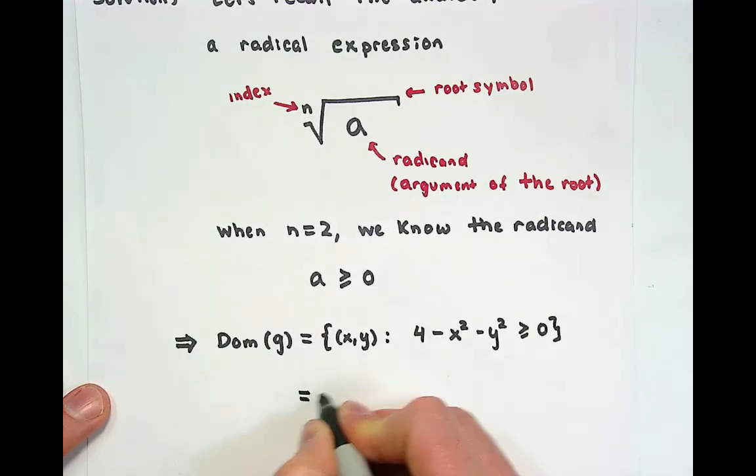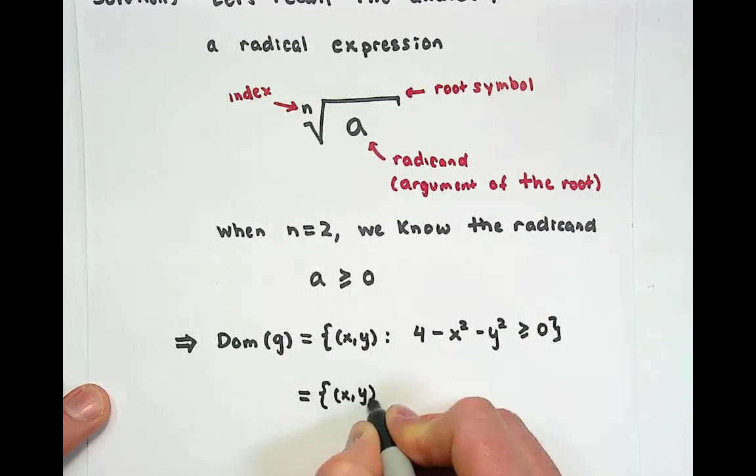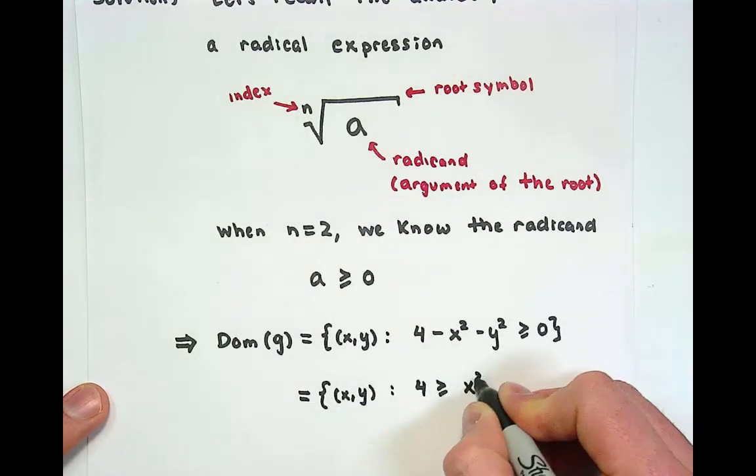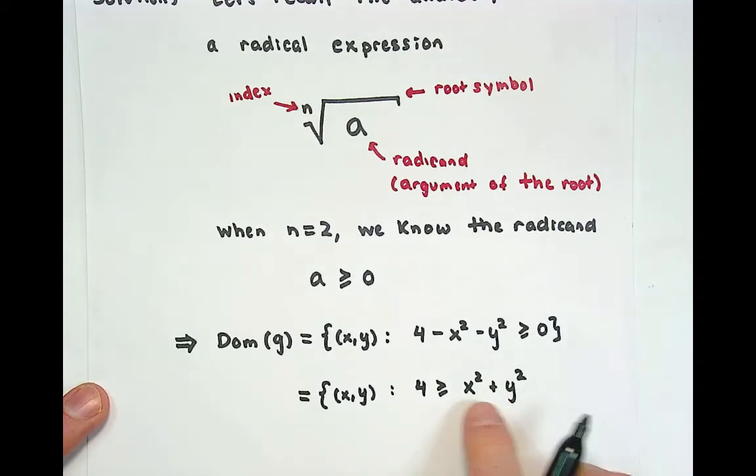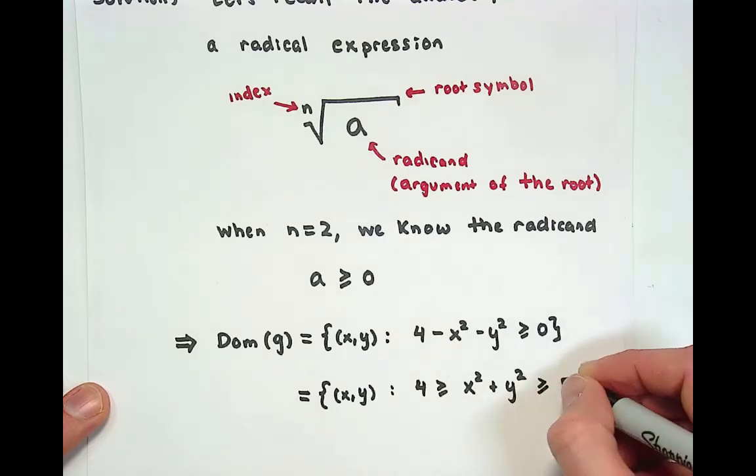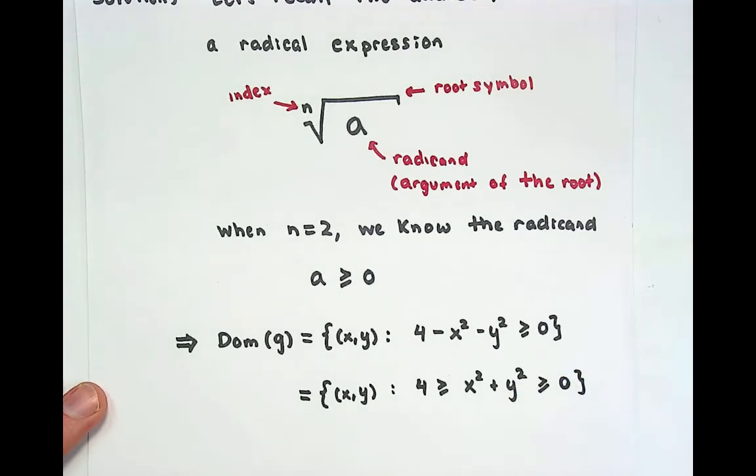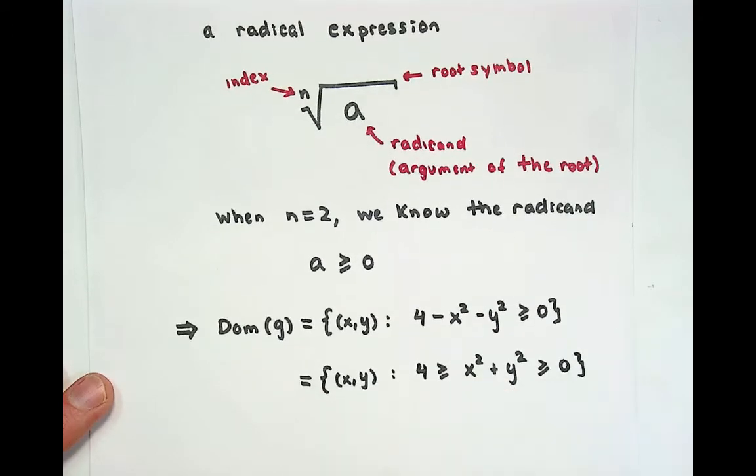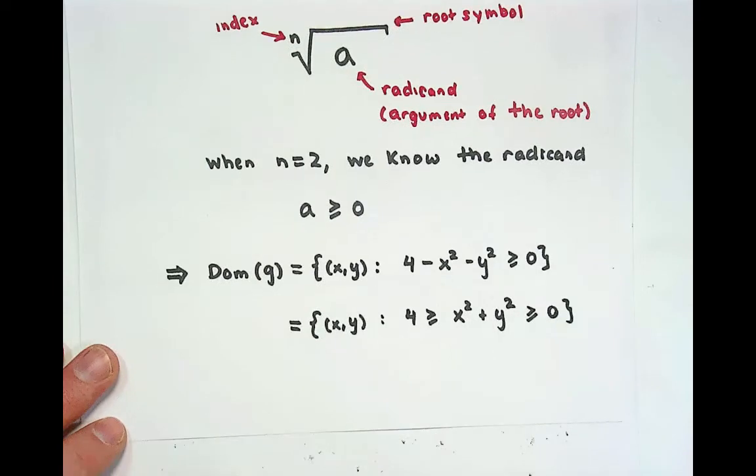What would that set be? This is the set of all inputs such that 4 bounds above x squared plus y squared. Notice that x squared plus y squared are going to be non-negative numbers. In other words, the sum of two squares would be bounded below by zero. That's not really important for the domain analysis, since we already know a little bit about that implicitly. However, I think it's worth noticing.